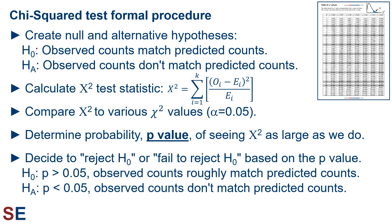Then we compare this calculated chi-squared value to critical chi-squared values from a table. The usual threshold is an alpha of 0.05. This allows us to determine the probability — the p-value — of seeing a calculated chi-squared value as large as we do. The p-value is the probability of getting a calculated chi-squared value as large as we do if the count values in the population our sample is from match the predicted values perfectly.